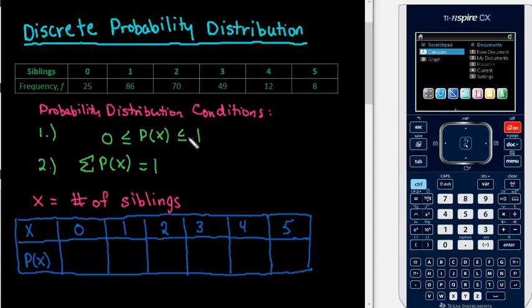Hi. For this video, we are going to create a discrete probability distribution. In order to be a probability distribution, the following conditions must be met. The probability of each individual probability of X has to be between 0 and 1 inclusive, so it could be 0 or it could be 1.